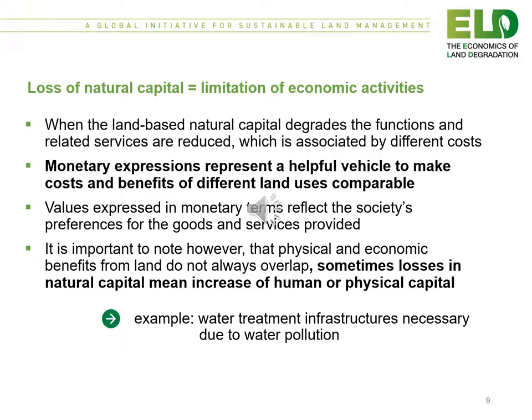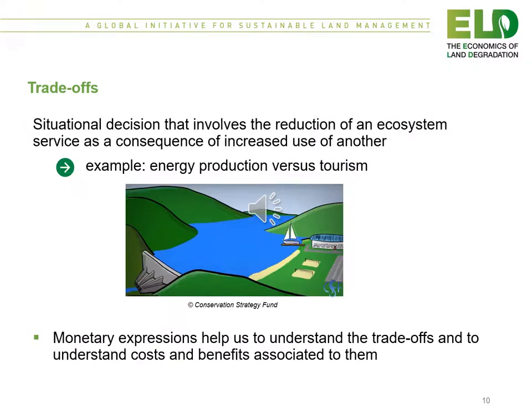Sometimes losses in natural capital actually mean increases in human or physical capital — for example, water treatment infrastructure made necessary due to water pollution. We inevitably have to deal with trade-offs, which means the reduction of an ecosystem service as a consequence of an increase in the use of another ecosystem service — for example, energy production versus tourism. Monetary expressions help us to understand these trade-offs and the costs and benefits associated with them.